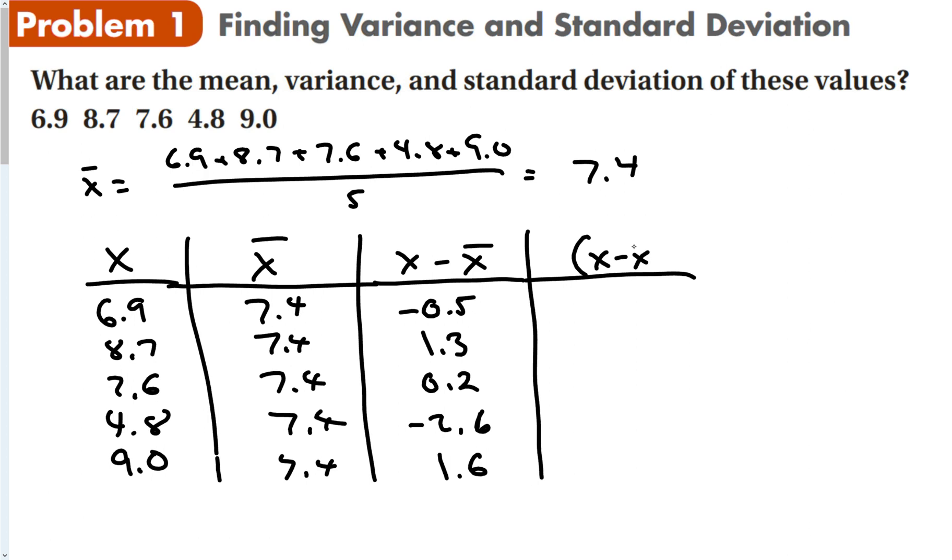Then we take those numbers in the previous column and square them. Now they're all positive: 0.25, 1.69, 0.04, 6.76, and 2.56. Then we take all these and add them together to get 11.30.